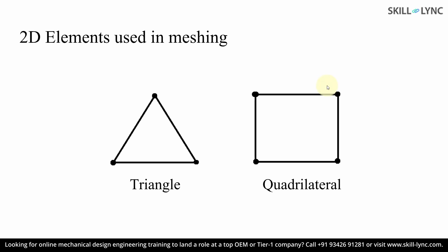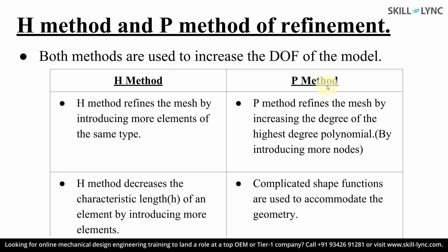For any mesh refinement, SOLIDWORKS provides two methods: H refinement and P refinement. In H refinement, we refine the mesh by including more elements into the model. In the P method, we keep the number of elements the same but increase the order of the elements used. In the H method, since we increase the number of elements, we decrease the characteristic length of each element. In the P method, the characteristic length remains the same while we increase the complexity of the shape functions included in the element.